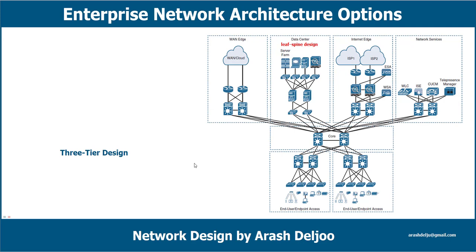For example, for the WAN edge we now have a dedicated distribution layer switch; for the internet edge we have a distribution layer switch; for network services we have a distribution layer switch. Because of that, we now have multiple distribution layer switches, and we can connect them all through the core layer.